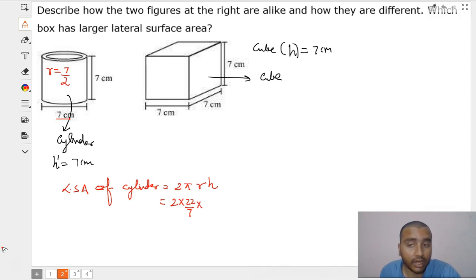multiplied by radius that is 7 by 2, multiplied by the height that is 7. So, from there we get the answer that is 154 centimeter square. So, from there, we get the lateral surface area of cylinder.